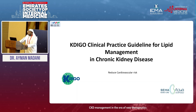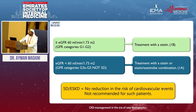Moving on to lipid management: if eGFR is above 60 — CKD stage 1 to 2 — treat with statin; evidence is 1B. If eGFR is less than 60 but not yet on dialysis, treat with statin or combination therapy; that's 1A. For stage 5 or dialysis patients, there is no reduction in cardiovascular event risk, so statins are not recommended in those patients — we don't start it, but we don't necessarily stop it for those already on treatment.